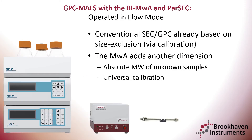Samples are injected onto a GPC column where typical injector loop volumes are between 50 and 200 microliters. The sample plug is pumped through the column and then out through a series of detectors, and finally is either sent to waste or to a fraction collector.